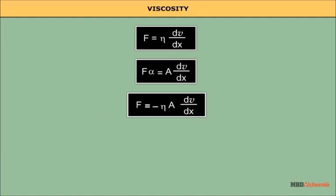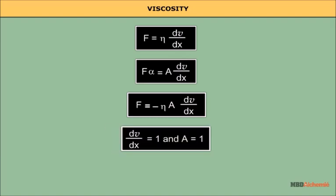The negative sign shows that the direction of viscous force F is opposite to the flow of the liquid. If dV/dX equals 1 and A equals 1, then F equals eta. Hence, the coefficient of viscosity of a liquid is defined as the viscous force acting per unit area of the layer of liquid which maintains a unit velocity gradient between its two parallel layers.